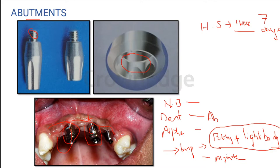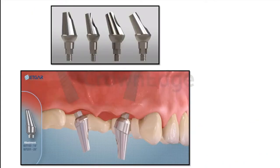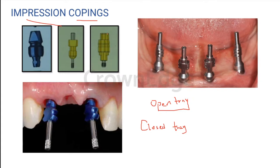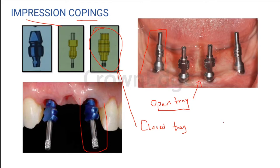In case you are not comfortable taking an impression with an abutment and think you might damage it, there is something also called impression copings. These come in two types: open tray and closed tray, depending upon the technique of taking impressions. You can see the difference in components — the closed tray impression coping is very small, while the open tray coping is much larger and will not fit into your normal impression tray, which is why it is referred to as an open tray.